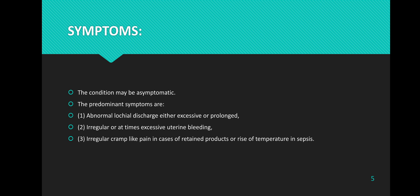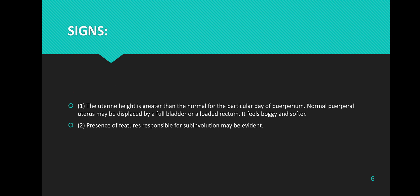The symptoms of uterine sub-involution include: it may be asymptomatic; however, the predominant symptoms are one, abnormal lochia discharge — either excessive or prolonged; two, irregular or excessive uterine bleeding; and three, irregular cramp-like pain in cases of retained products, or rise of temperature in sepsis.